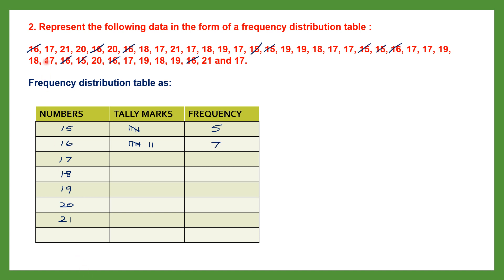For 17: counting through, we make one bundle of five, then another bundle of five, then one extra. Five plus five is 10, plus one is 11. So the frequency of 17 is 11. Notice how easy it is to count when you use tally mark bundles.